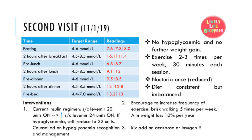On the second visit, the patient's SMBG results were all out of target range. Mr. Ull claimed he did not experience hypoglycemic symptoms and had no further weight gain. He exercised 2 to 3 times per week, 30 minutes each session. The frequency of nocturia reduced to approximately once per night and he started to have a more consistent diet but still imbalanced. We suggested increasing the dose of Levemir to 24 units, with an option to reduce to 22 units if hypoglycemic symptoms occurred. We also encouraged the patient to exercise more frequently and aim for a weight loss of 10% per year. If blood sugar levels remained high on the next visit, ACABOS or Insigen-R might be chosen to control postprandial blood sugar levels.